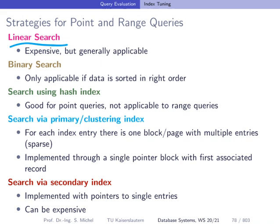We can apply hash indices. The database system can make use of hash indices — they are very good for point queries, but the downside is that they are not applicable at all to range queries. So if we have a range like ID bigger than 42, the index cannot be used and the database system cannot use it to accelerate tuple access. Hence, we have to go back to a linear search, which is expensive.